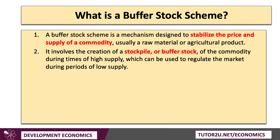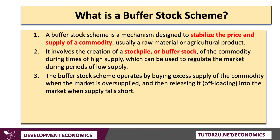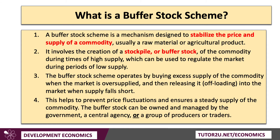A Buffer Stock basically involves creating a stockpile or buffer of the commodity during times of plentiful supply, which can then be used to regulate the market during periods of low supply. The Buffer Stock Scheme operates by buying excess supply when the market is oversupplied, then releasing it into the market when supplies fall short or when there's an increase in demand. The aim is to stabilise the market, reduce price volatility, and ensure a steady supply for both consumers and producers. Typically a Buffer Stock is owned and managed by the government, a central agency, or a group of producers forming a type of cartel.